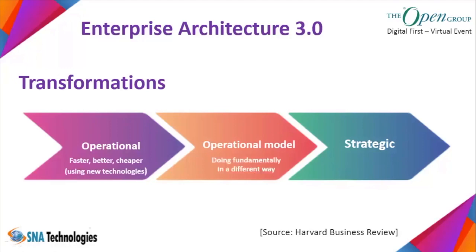Strategic transformation means crossing the boundaries of business domains — like Amazon going from retail to cloud computing, or Google expanding from advertising into other areas. These companies crossed boundaries, entered multiple businesses, and completely changed the essence of the company itself, transforming from both a technology and business perspective to come up with a completely new direction.